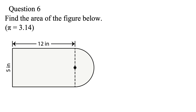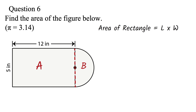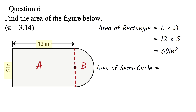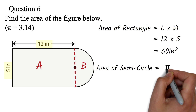Question 6: Find the area of the figure below. Use pi equals 3.14. The key is to break this into multiple shapes, find the area of each shape, and add the areas. We can draw a line so that we have a rectangle A and a semicircle B. The area of a rectangle is length times width — we know the length as 12 inches and the width as 5 inches, giving 60 inches squared. The area of a semicircle is pi r squared over 2.